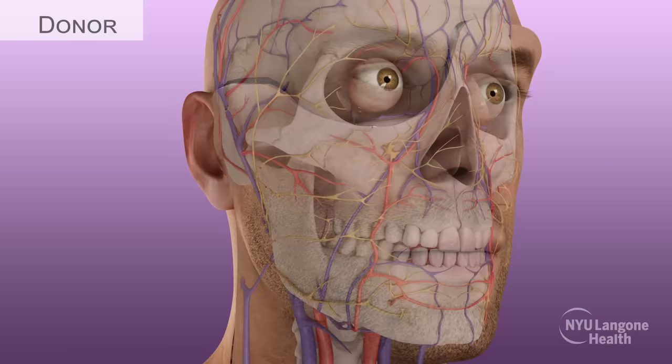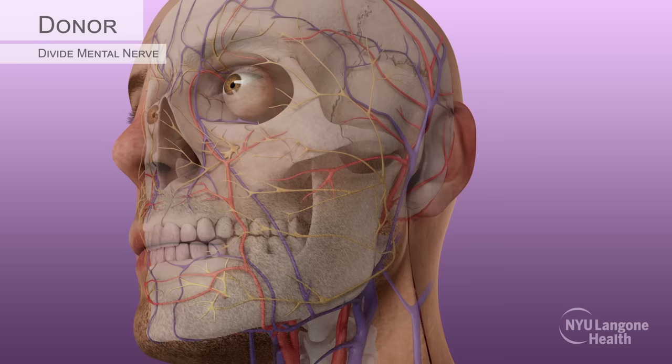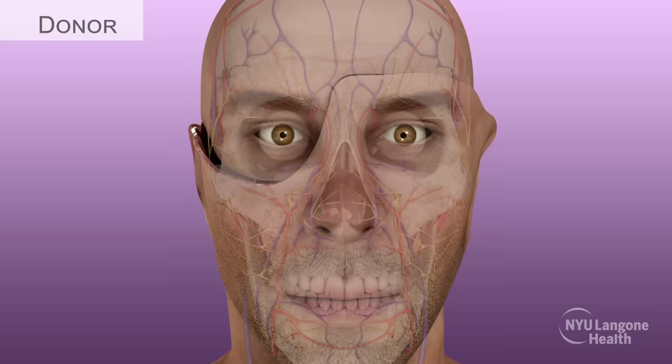The branches of the facial nerve were carefully dissected circumferentially and transected distally on the right. On the left, the facial nerve was dissected circumferentially and transected at the level of the trunk as it exits the base of the skull. The mental nerves were also carefully identified, divided, and included within the allograft to preserve sensation to the lower lip and chin.